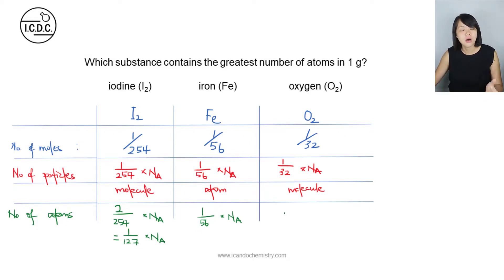What about oxygen? In one oxygen molecule, there are two atoms. So the number of oxygen atoms will be 2 multiplied by this number of oxygen molecules. So we will have 2 over 32 multiplied by Avogadro's number, which gives us 1 over 16 multiplied by Avogadro's number.